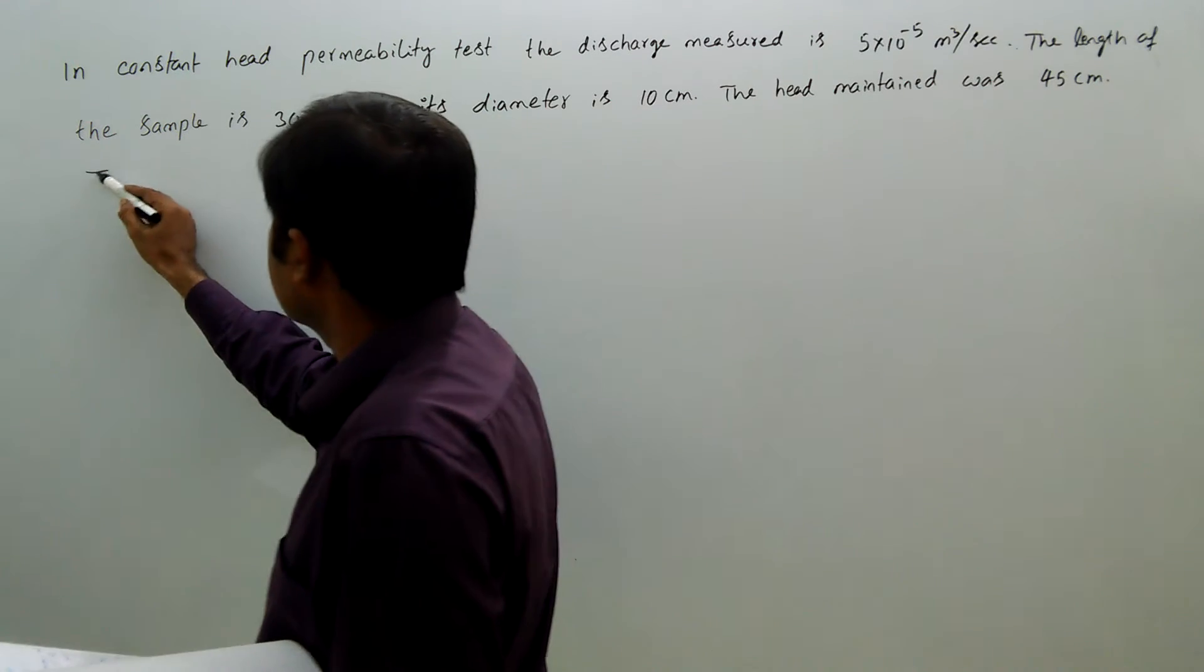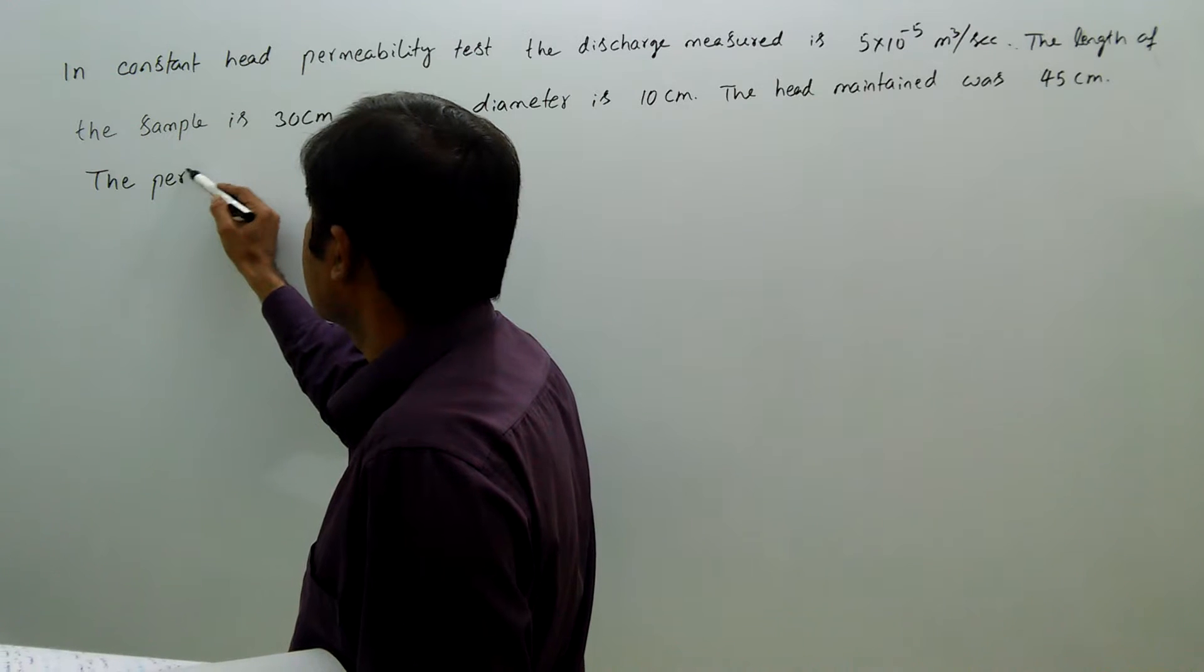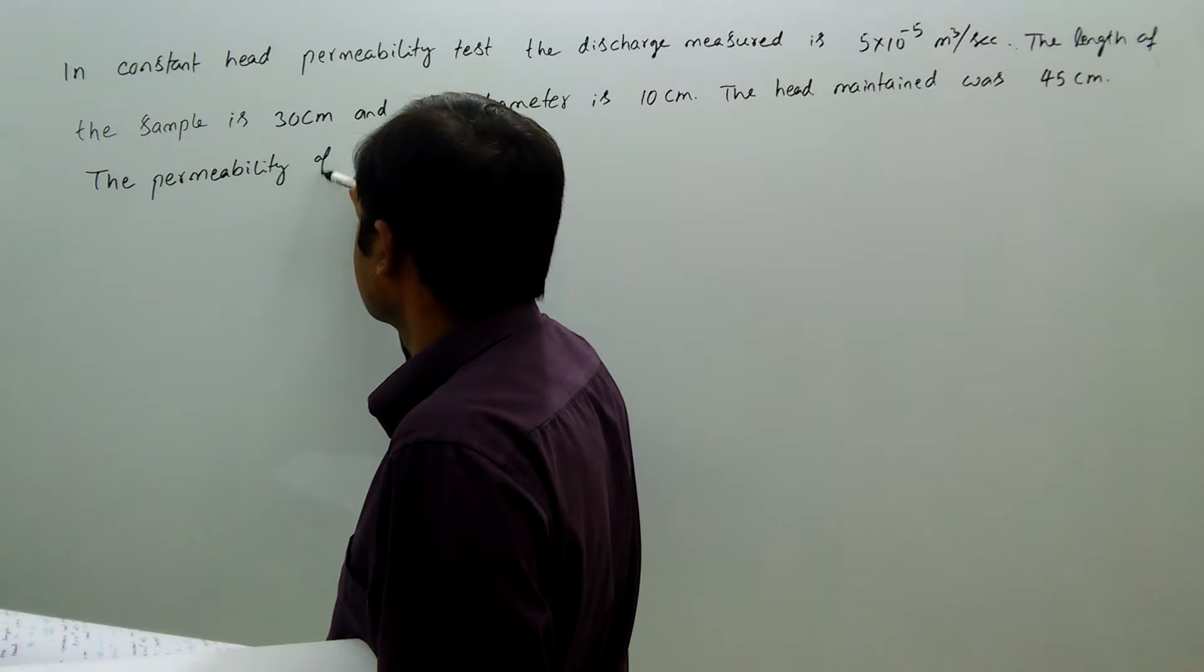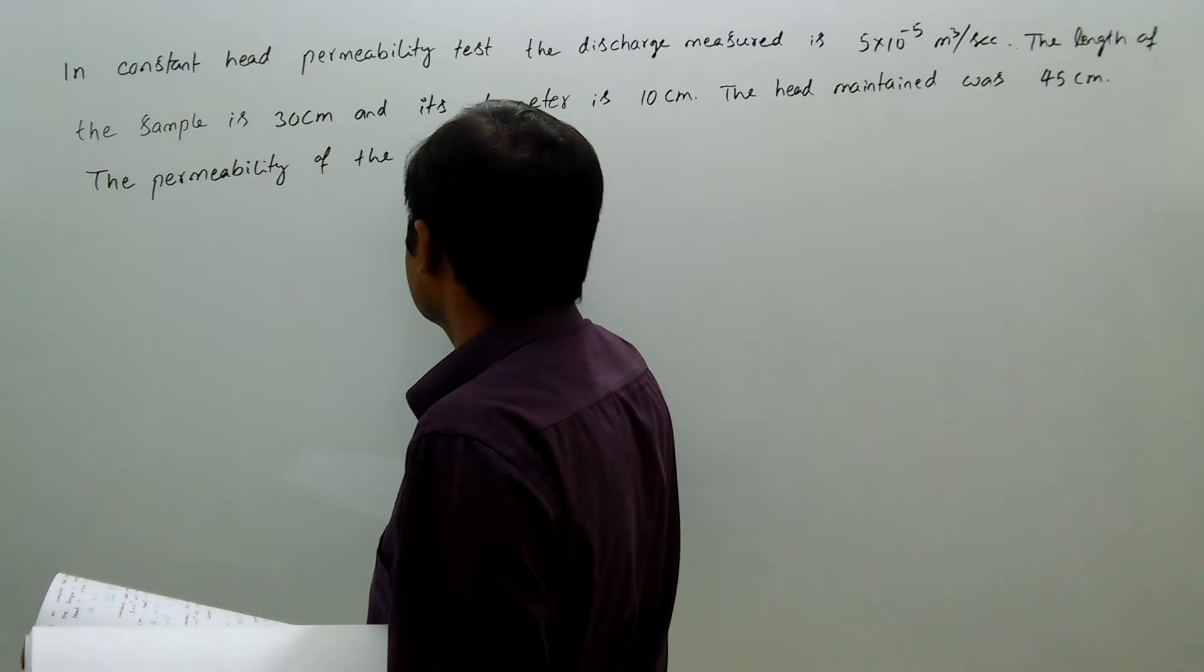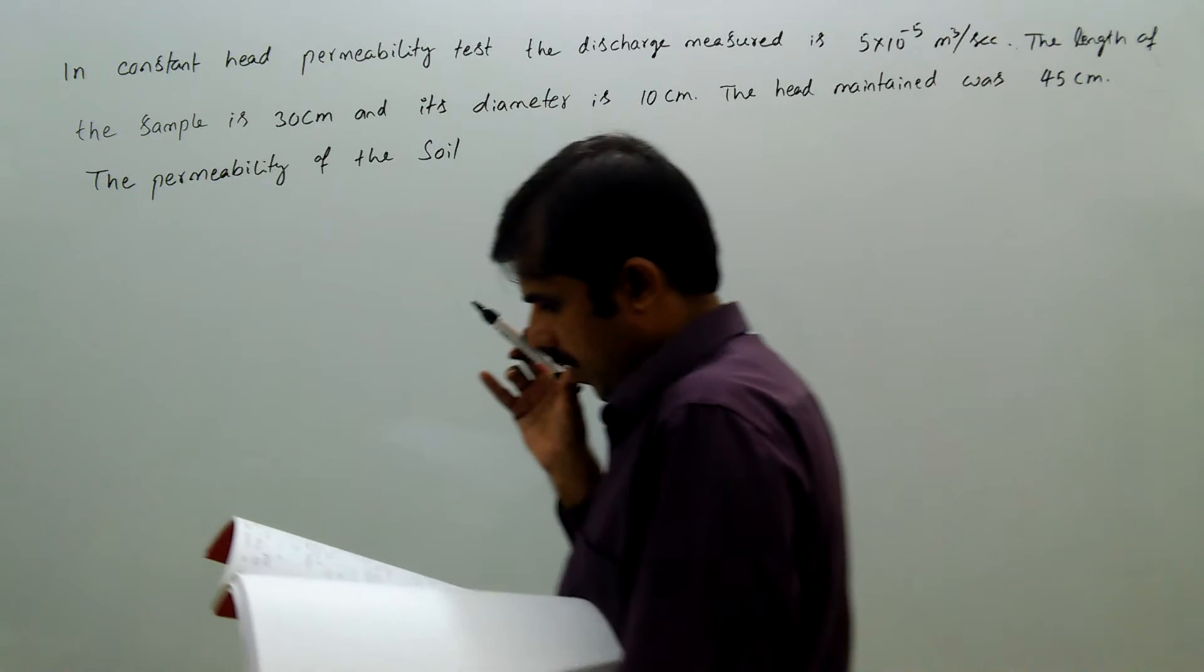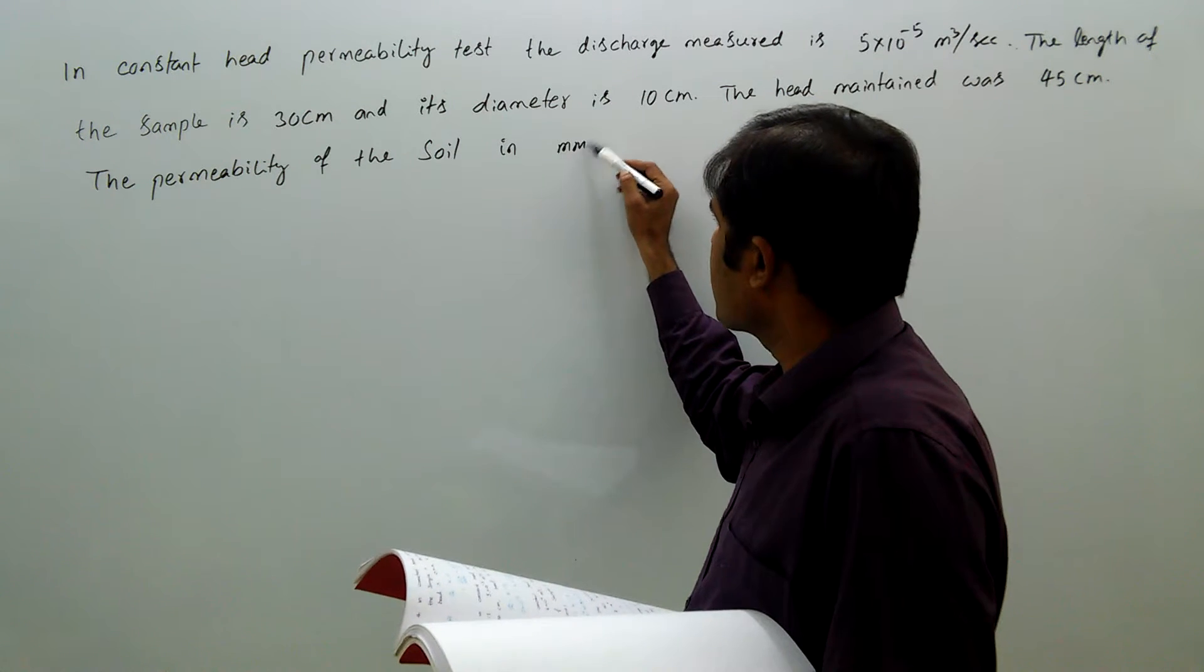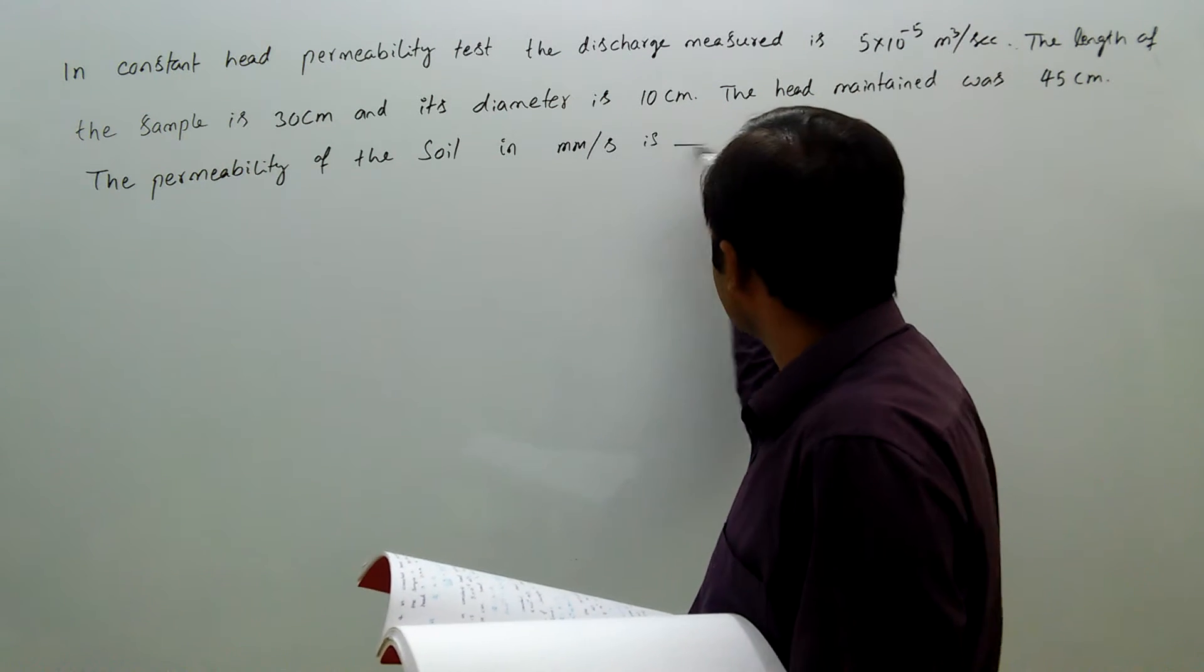The permeability of the soil in mm/s is dash.